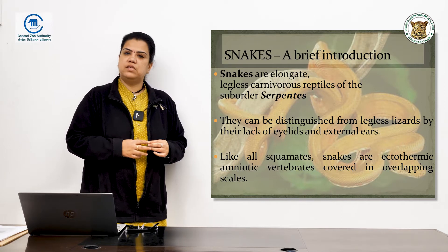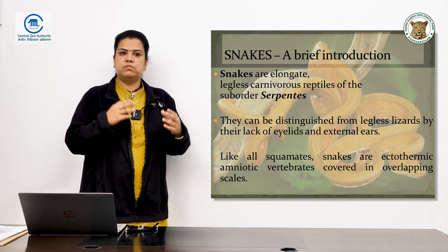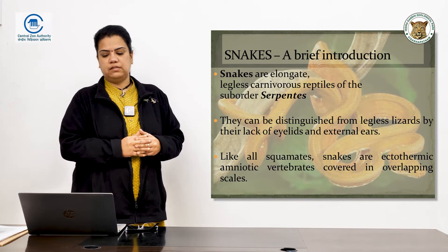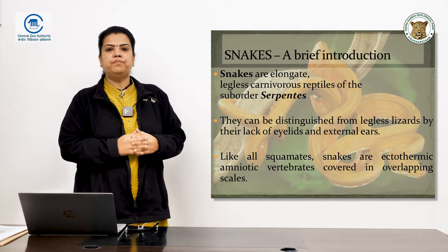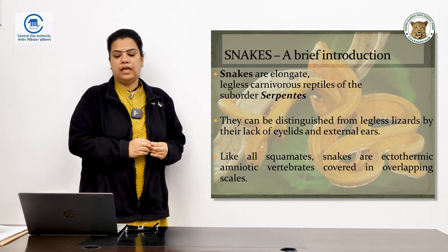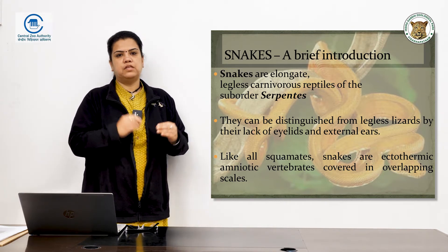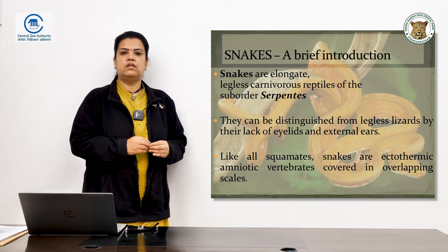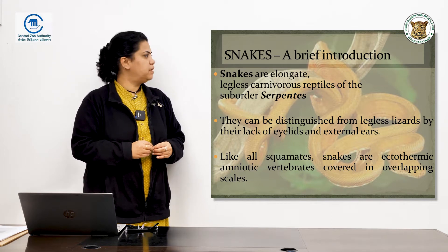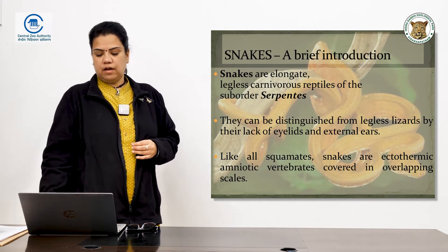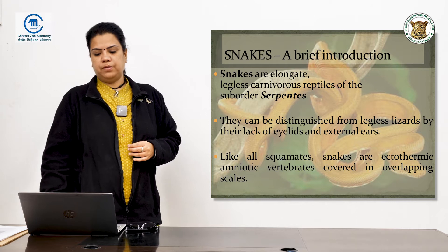They can be distinguished because of the absence of eyelids and external ears. Their main feature is that they are ectothermic — they depend on the external environment to maintain their basic temperatures, and they are covered with overlapping scales.